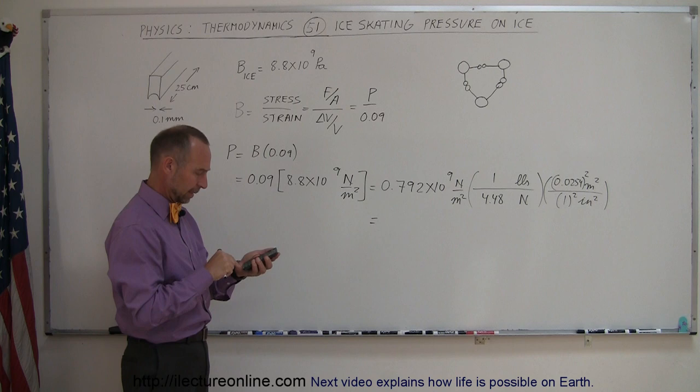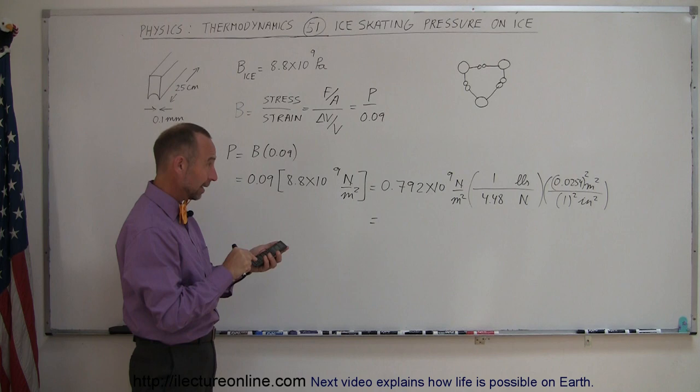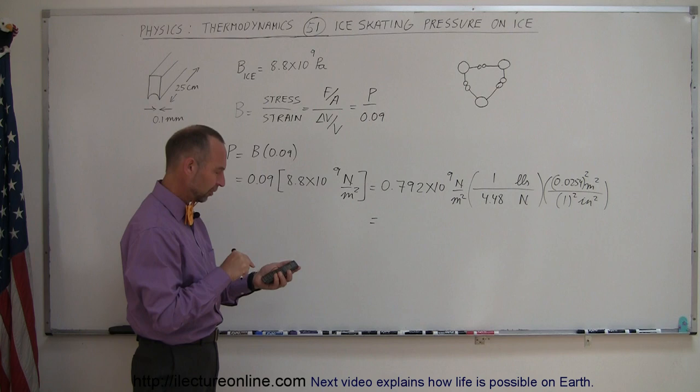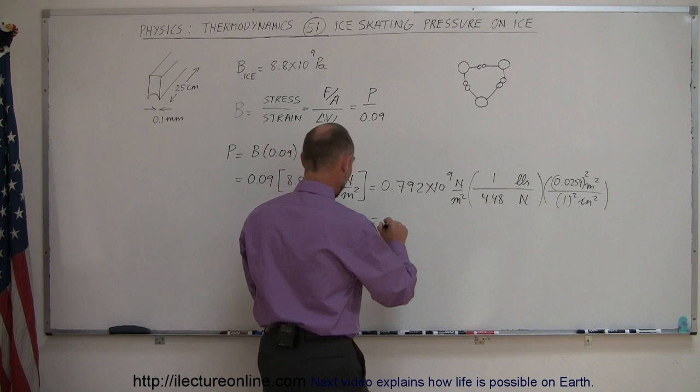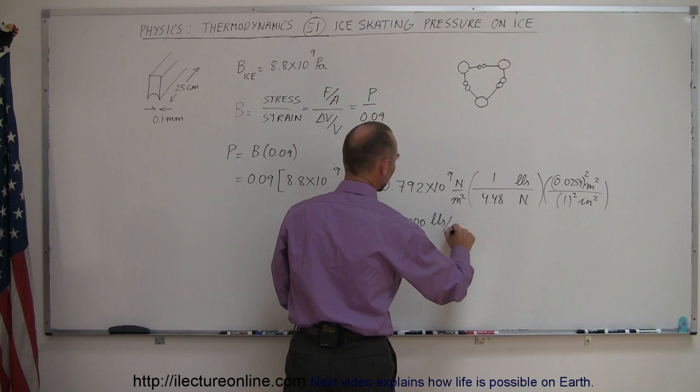So that's divided by 4.48 and multiplied times 0.0254 squared, and converting that to engineering units, that's about 114,000 pounds per square inch. Now is the weight of a person on ice skates sufficient to melt the ice?